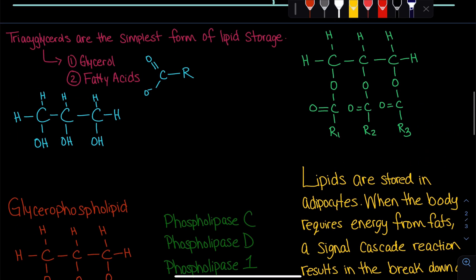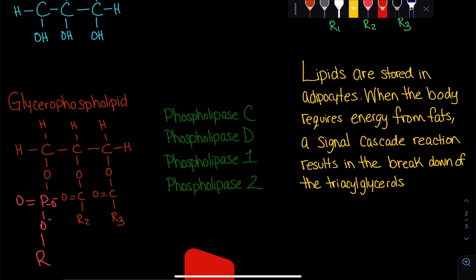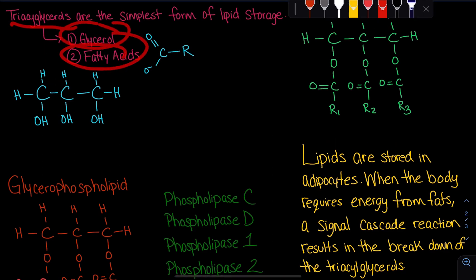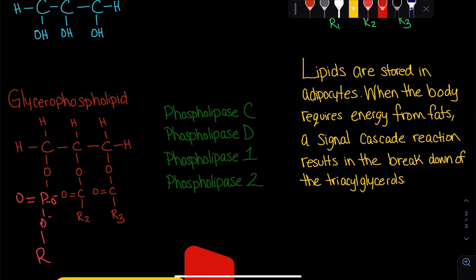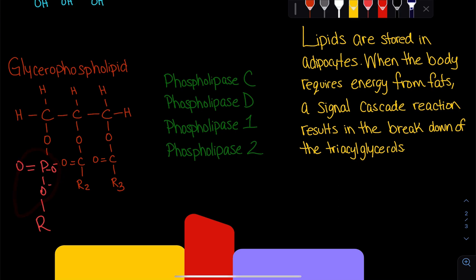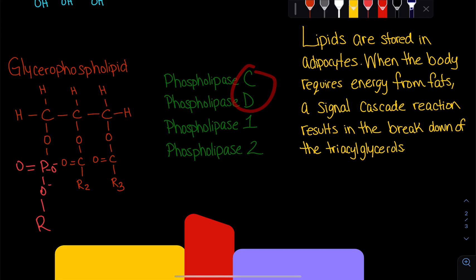In order for our body to break down glycerophospholipids or triacylglycerols and utilize those fats for energy, we need enzymes that break these ester bonds to separate glycerol and fatty acids. There are four enzymes: phospholipase C, D, 1, and 2. Phospholipase C and D apply to the phosphate region, while 1 and 2 apply to the fatty acids. Phospholipase C comes first in the alphabet so it cleaves the first bond; phospholipase D is second and cleaves the next bond.